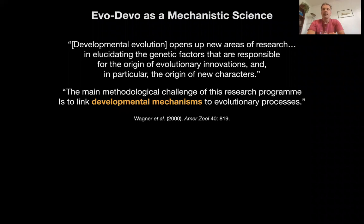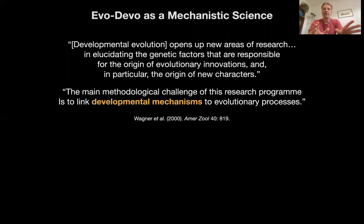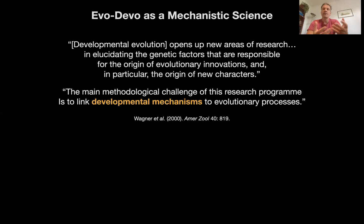A few years back, Gunter Wagner and a number of colleagues stated that evolutionary developmental biology is a mechanistic science. They write that developmental evolution opens up new areas of research in elucidating the genetic factors responsible for the origin of evolutionary innovations, and in particular the origin of new characters. So we want to understand the causes of evolutionary novelty — innovation, novelty — in a mechanistic way.